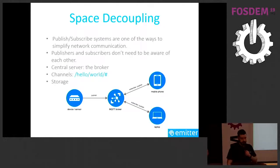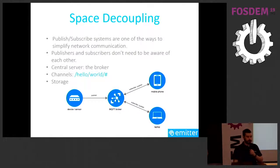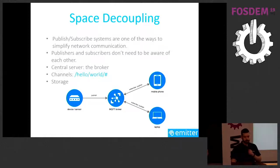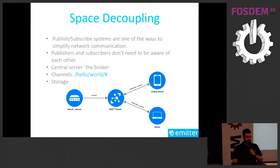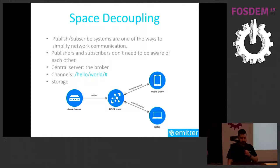A common solution is to introduce spatial decoupling using a publish-subscribe system. Clients no longer send messages directly to each other; they send messages to a central server called a broker. Clients don't need to be aware of each other — they communicate through channels, which are virtual paths like /hello/world/something. The broker handles authentication, message forwarding, and optionally storing messages to deliver them later.